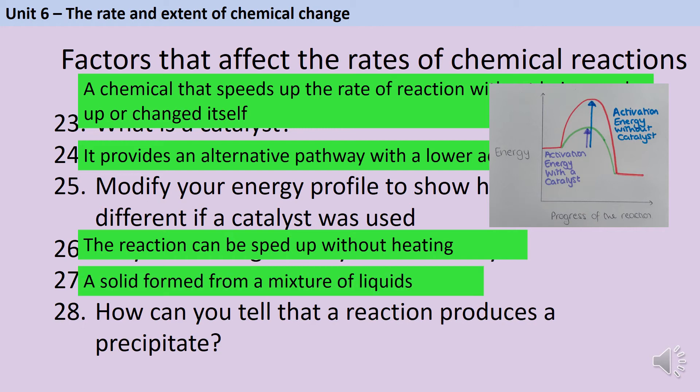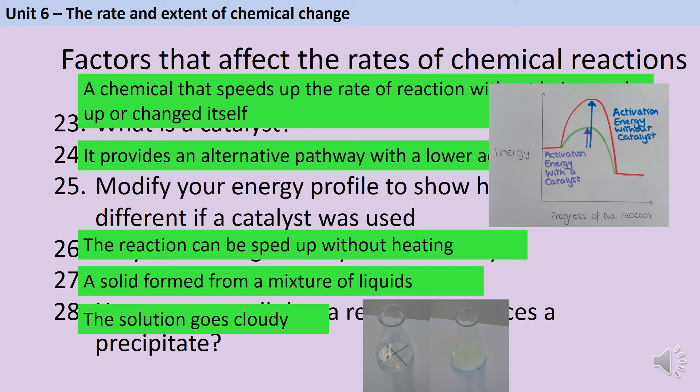A precipitate is a solid that forms from a mixture of liquids, and you can tell if a reaction makes a precipitate because the liquid will go cloudy. The classic example is you've probably done this practical where you mixed dilute sodium thiosulfate with dilute hydrochloric acid. After a little while it produces a sulfur precipitate, a sort of yellow solid, and it makes the solution go cloudy. You might have done this on top of a cross and seen the cross disappear.